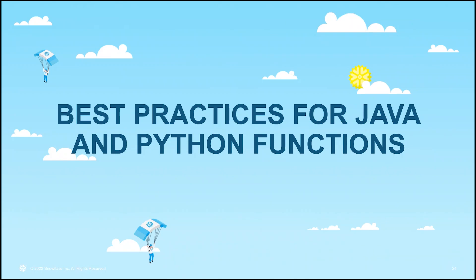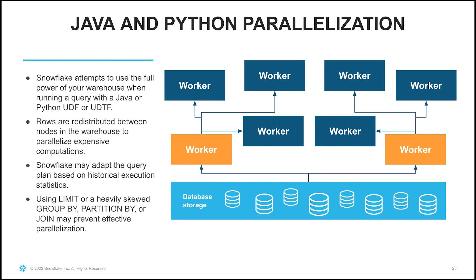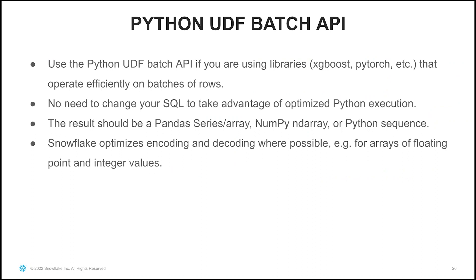When you run a query that uses a Python or Java UDF, Snowflake attempts to use the full power of your warehouse by redistributing rows between nodes to parallelize expensive computations. We collect historical statistics to see if your UDF is fast or slow and use that to distribute work among workers. However, if you use a LIMIT clause or a heavily skewed GROUP BY, PARTITION BY, or JOIN, that may prevent effective parallelization. You may want to use the Python UDF batch API if you're using libraries such as XGBoost or PyTorch that operate efficiently on batches of rows, with no need to change your SQL — you can do it entirely in your Python code.